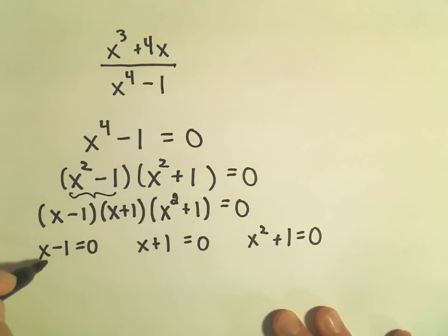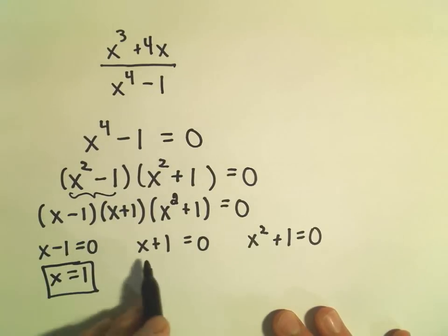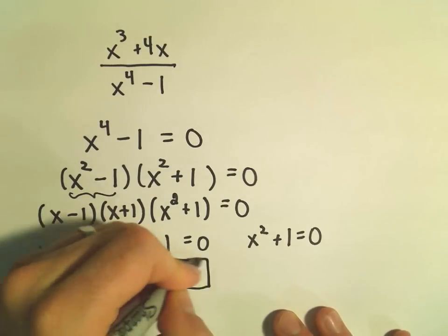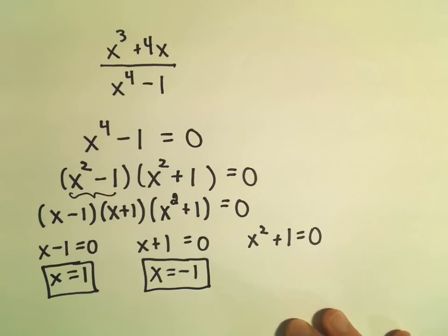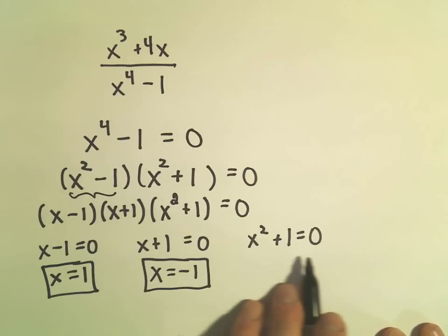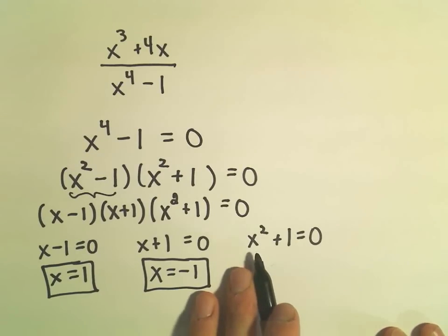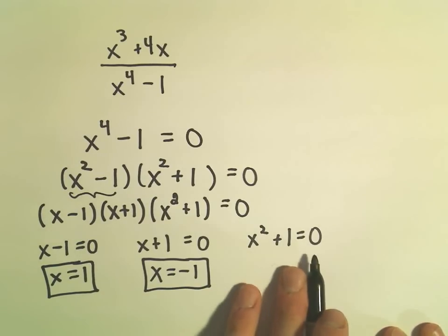So for the first part, I'll just add 1 and get x equals 1. So that's going to be a value that has to be excluded from the domain. From our middle equation, we could simply subtract 1 and get x equals negative 1. So that'll be a value that has to be excluded from the domain.